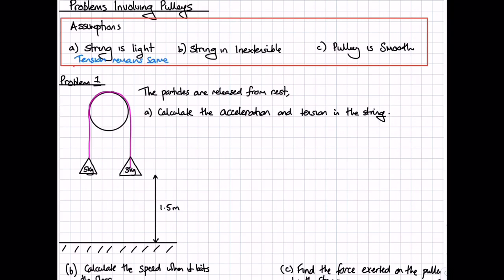If the string is inextensible, then this means that the acceleration will remain the same — so the acceleration for each particle is the same. And finally, if the pulley is smooth, which means there will be no friction involved, this also means that the tension in the string will be the same on both sides of the pulley.